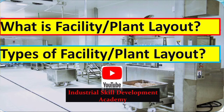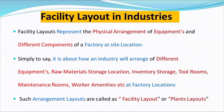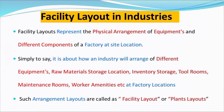We will cover definitions, its importance, and the different types of plant layout. First of all, what is facility or plant layout? In industries, facility layout represents the physical arrangement of equipment and different components of a factory at a site location. Simply put, it is about how an industry arranges different equipment, raw material storage, inventory storage, tool rooms, maintenance rooms, workers' amenities, etc., at a factory location.